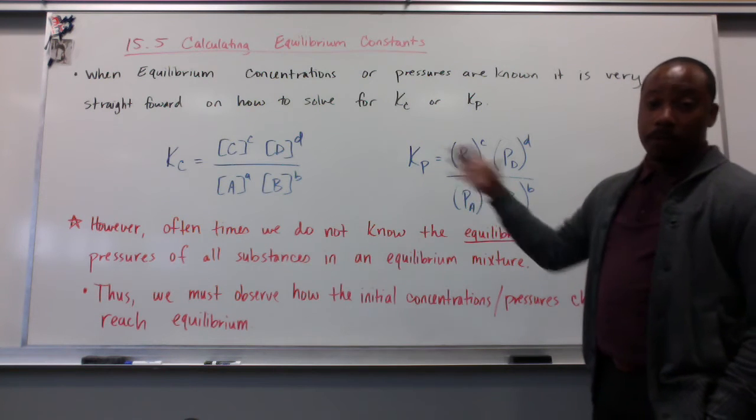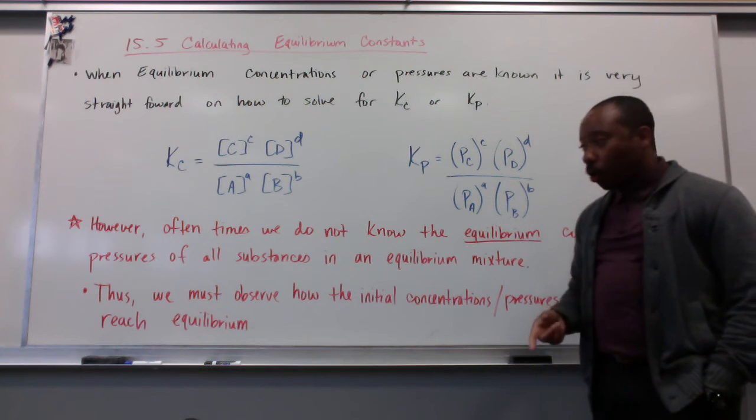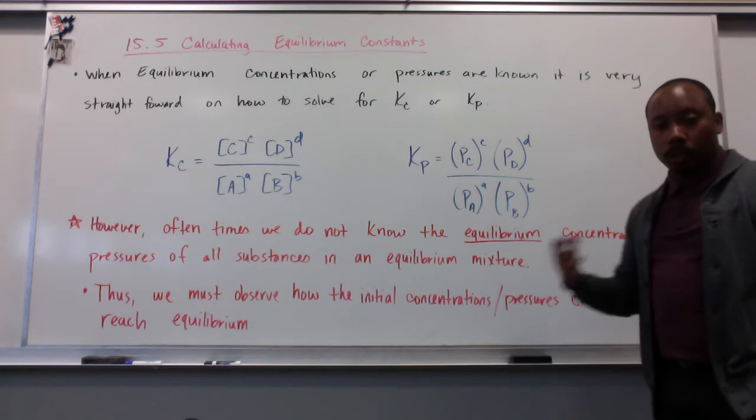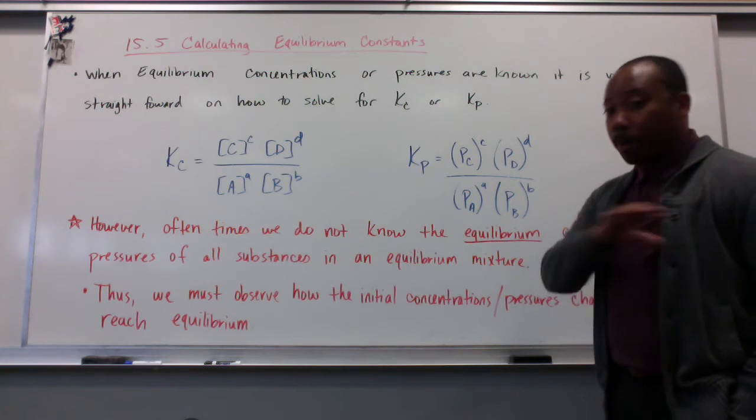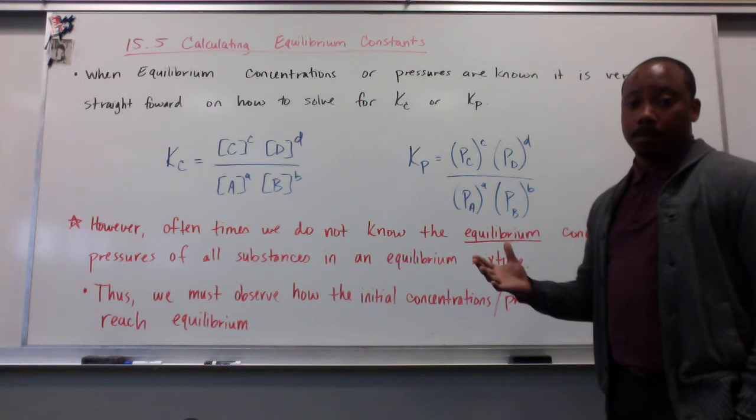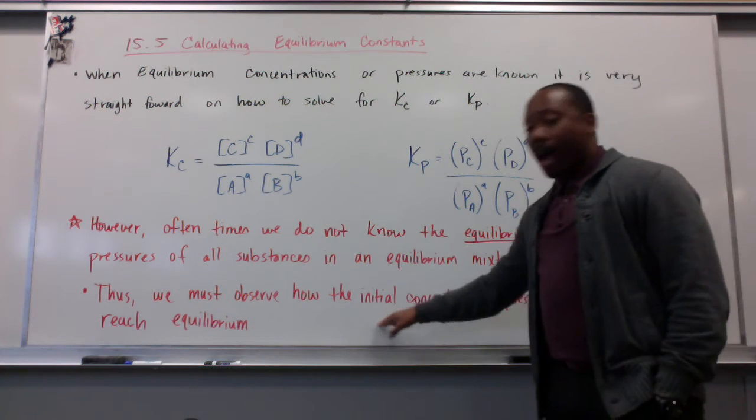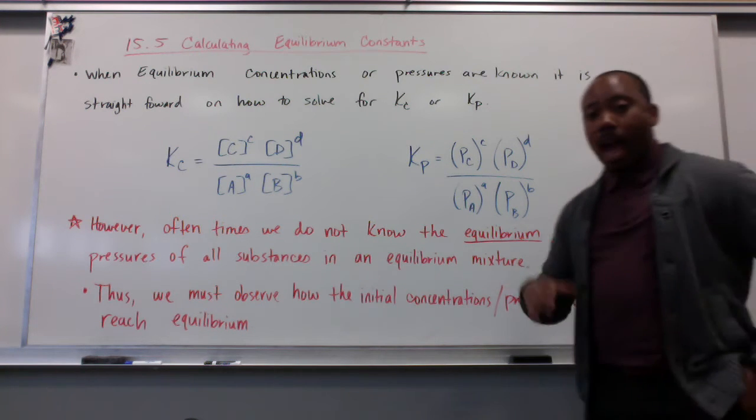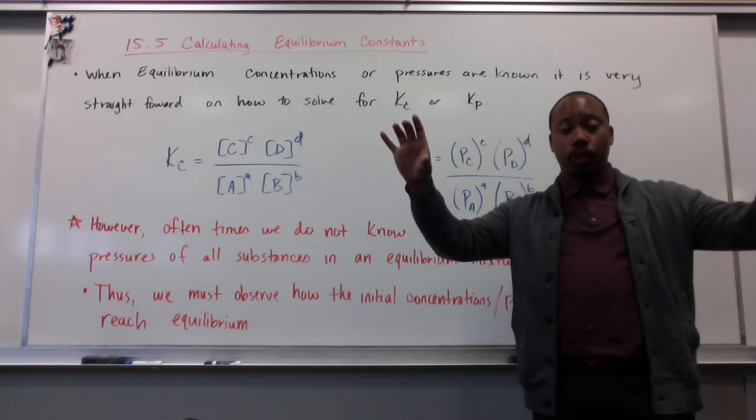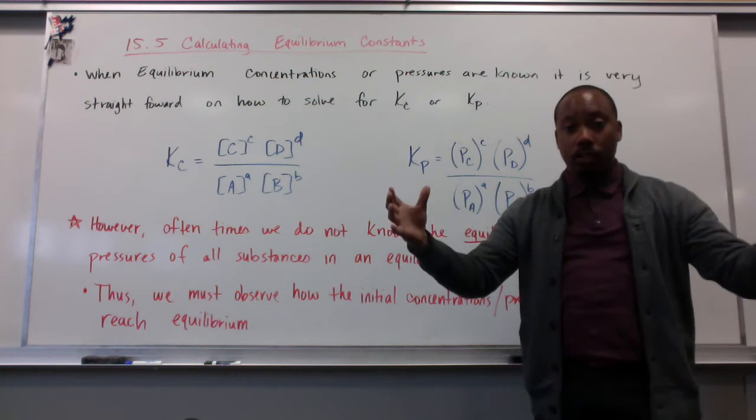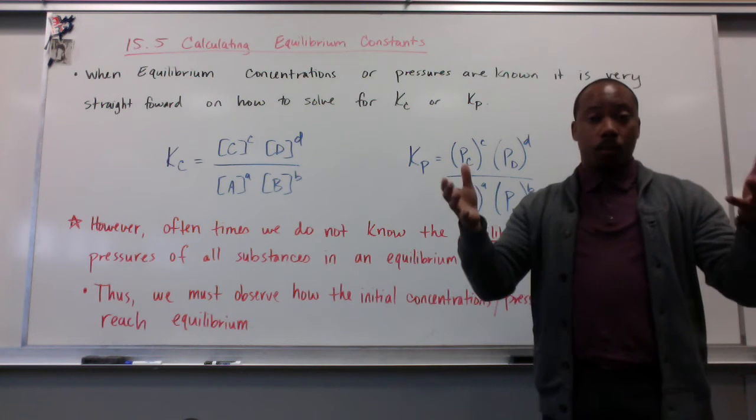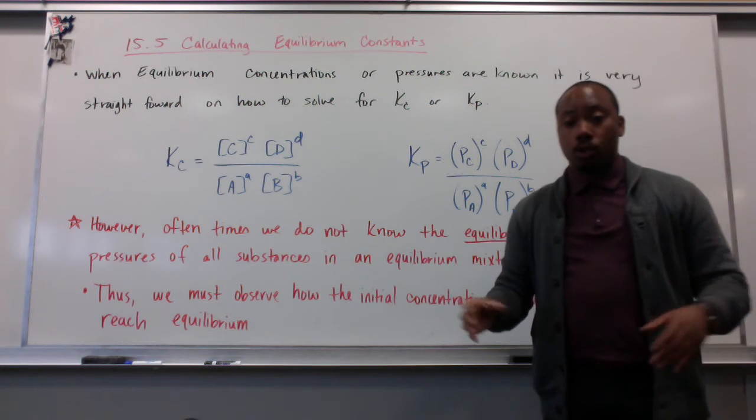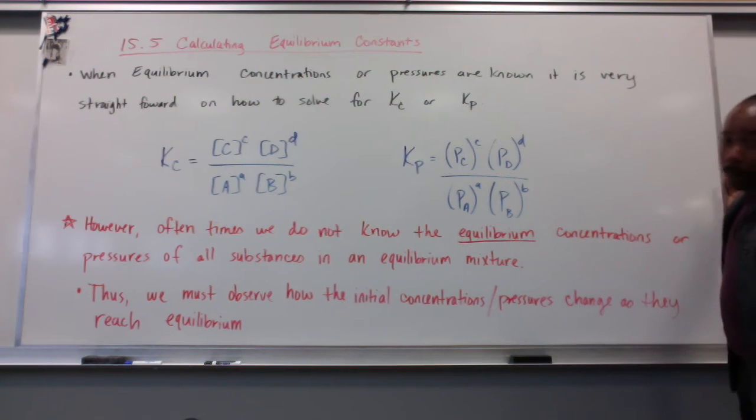However, that's only a perfect scenario. Oftentimes, we do not know the equilibrium concentrations or pressures of all substances in the equilibrium mixture. Maybe one, maybe two, but definitely not all. Sometimes none of them. Thus, we must observe how the initial concentration or pressures change as we reach equilibrium. We have some initial concentration or initial pressure, then we go through some kind of change. My reactants are usually depleted in some form or fashion, creating my products. Then I have some concentrations present at equilibrium. So, in order to learn how to observe that, let's look at a sample problem.